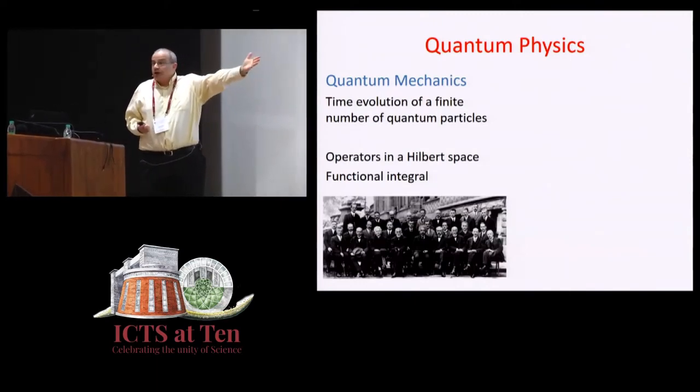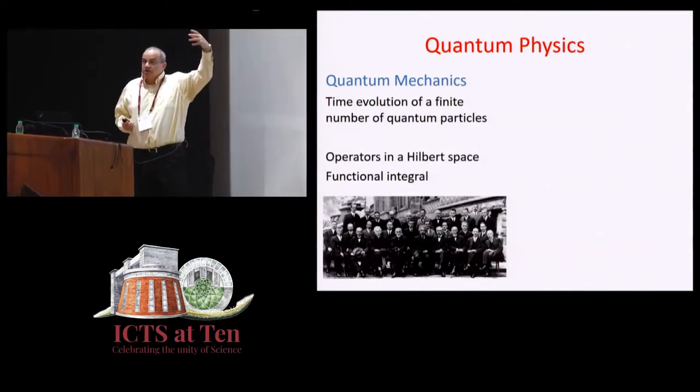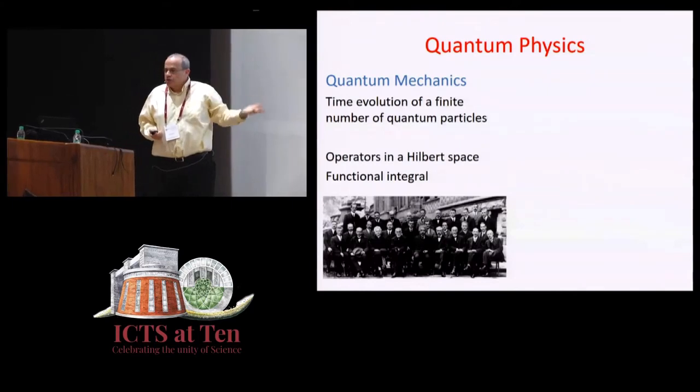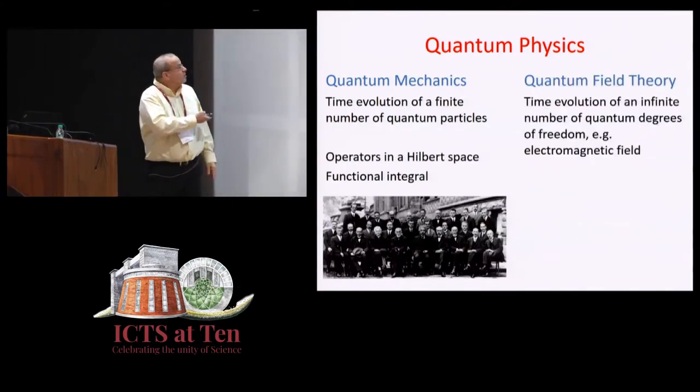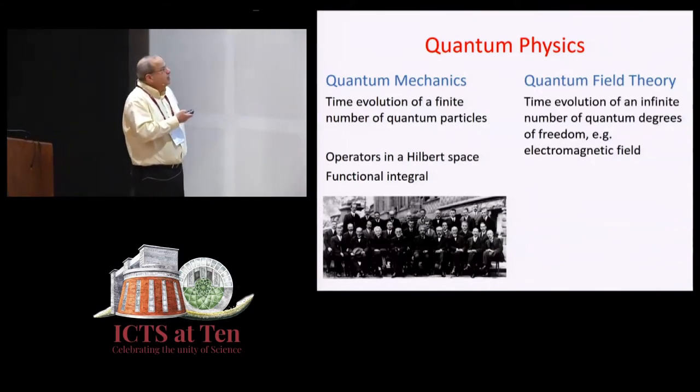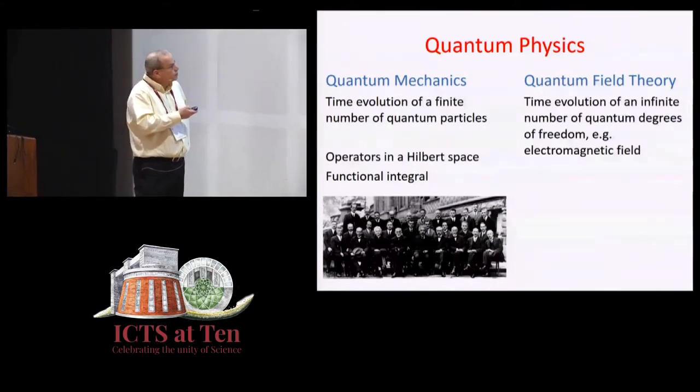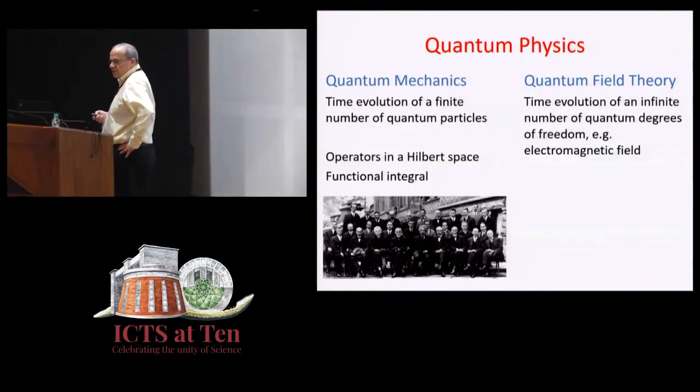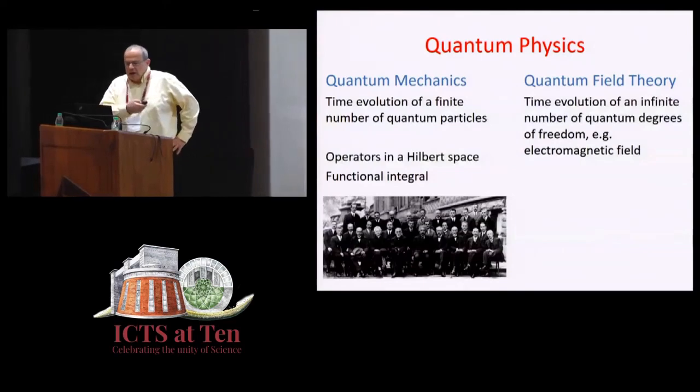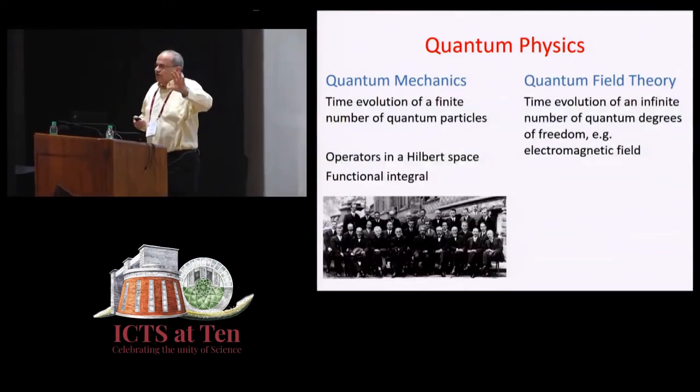And now we need to put something in the right column, which would be the parallel of what we had before in classical mechanics versus classical field theory. So here we should put quantum field theory, and it's very much kind of completing the square. We have time evolution of an infinite number of quantum degrees of freedom. Before we had classical, now we have quantum degrees of freedom. For example, the electromagnetic field.